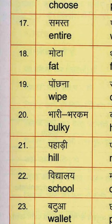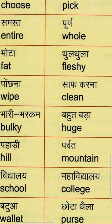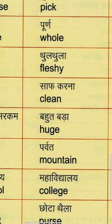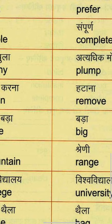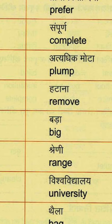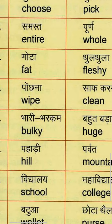Seventeenth group: Samagra means Entire — E-N-T-I-R-E. Poorn means Whole — W-H-O-L-E. And Sampurna means Complete — C-O-M-P-L-E-T-E.